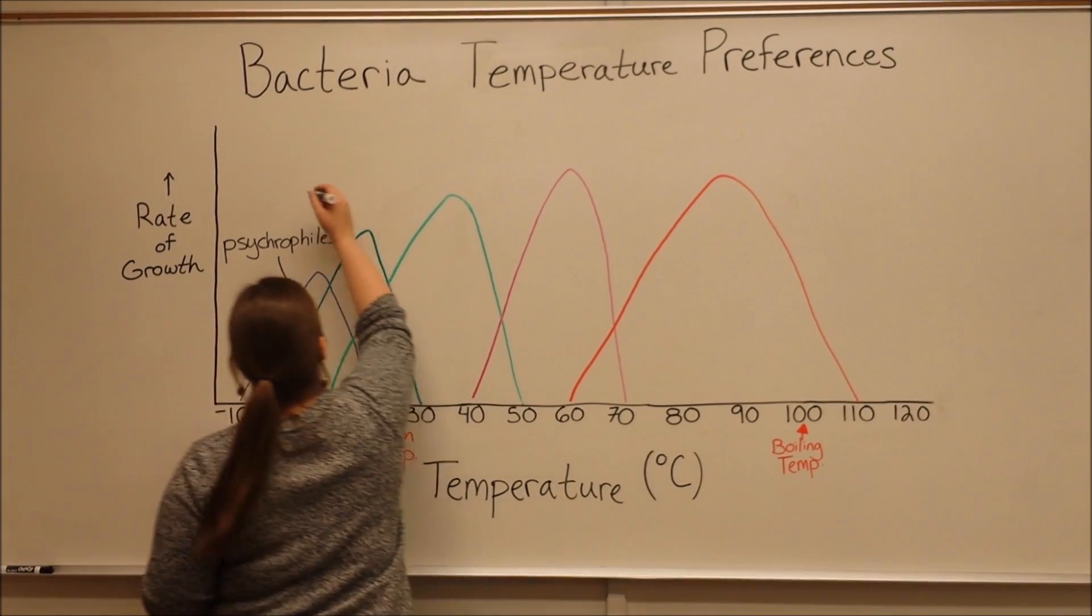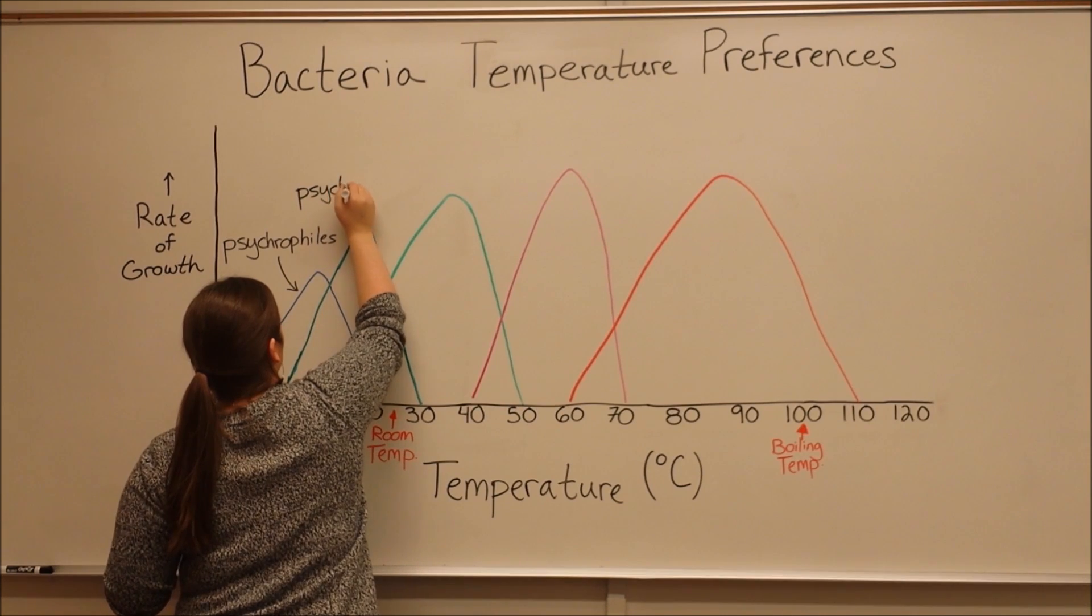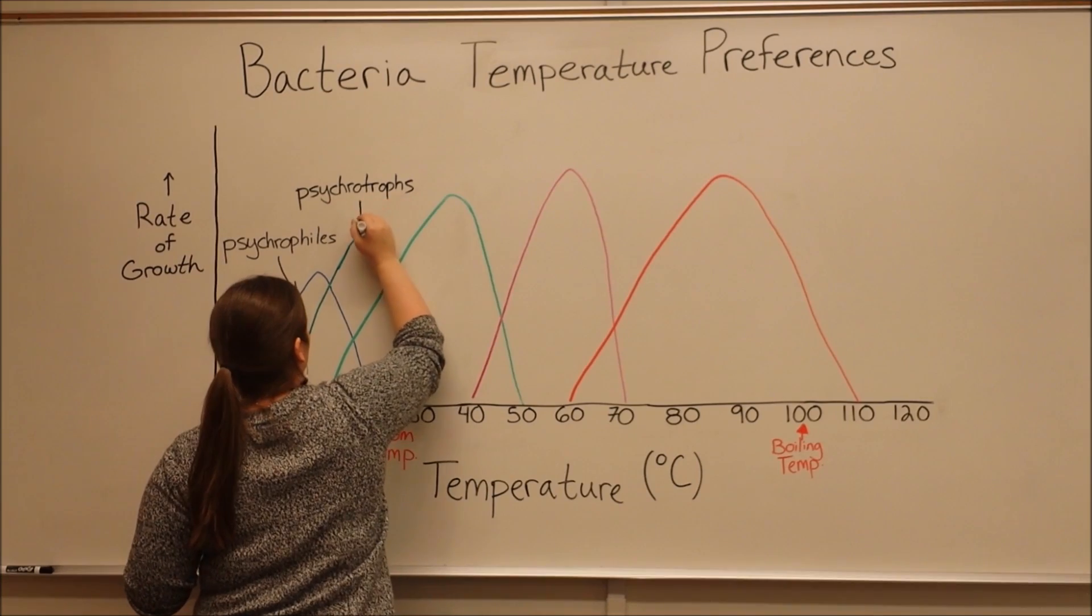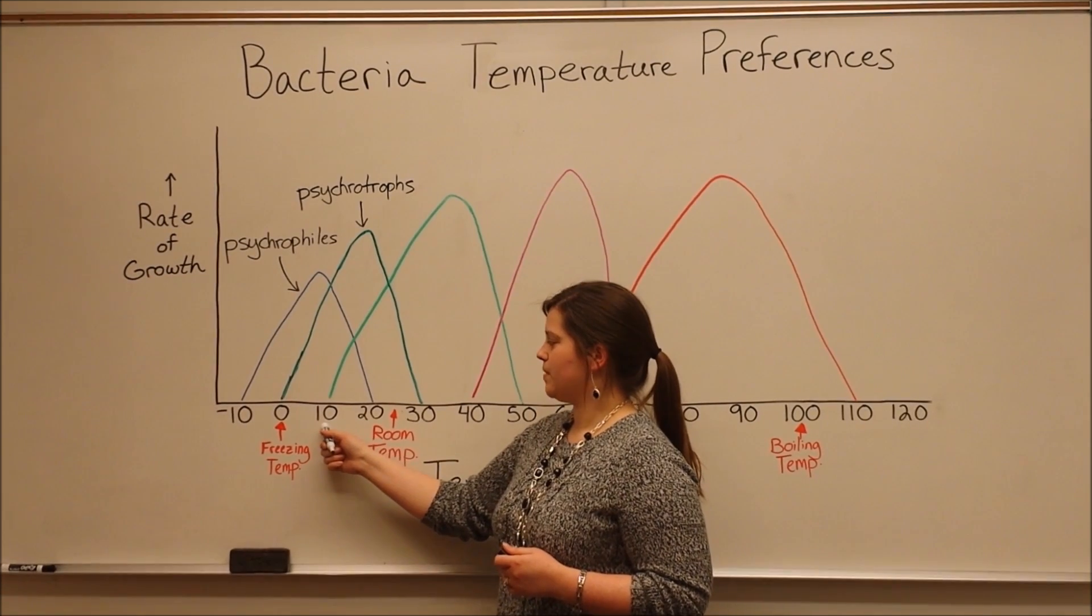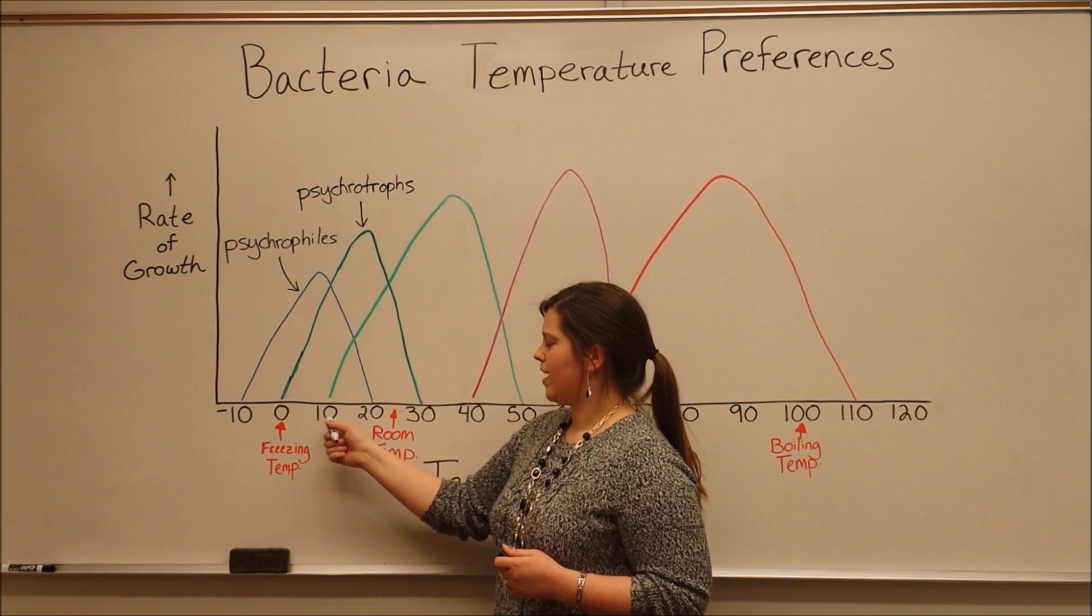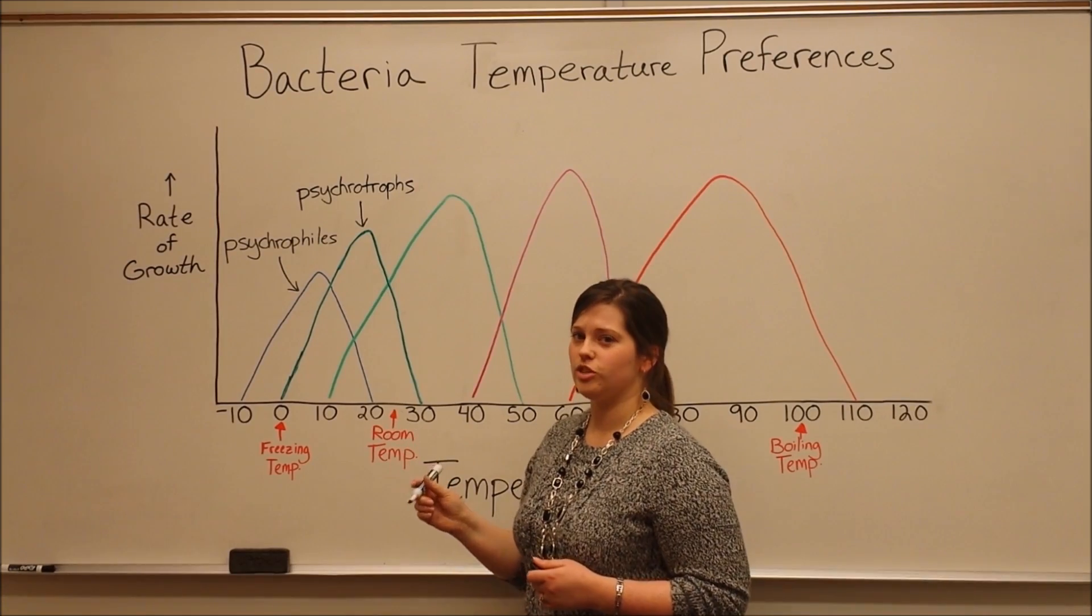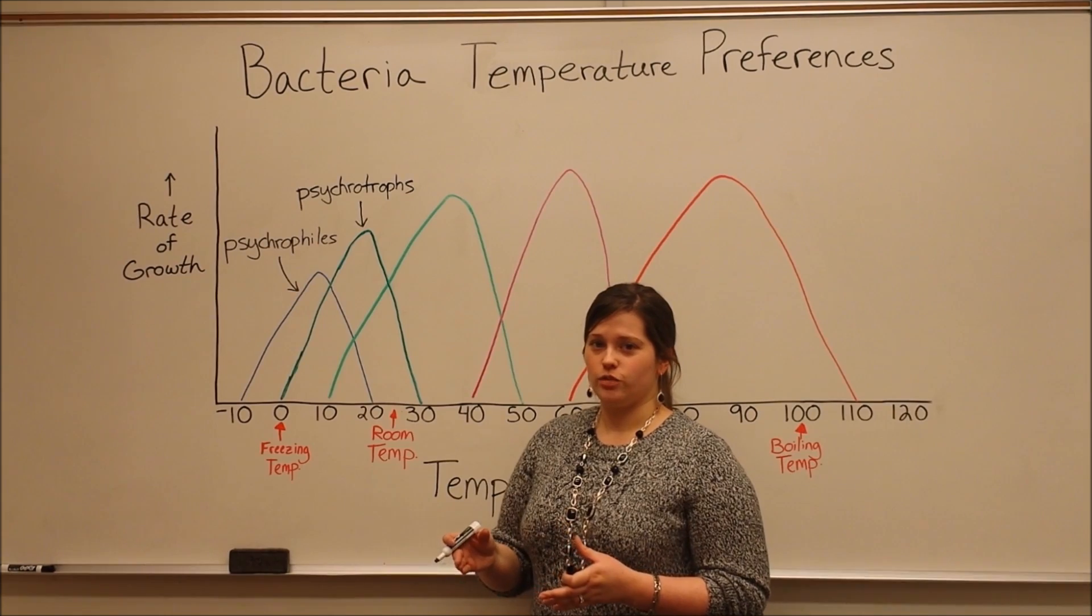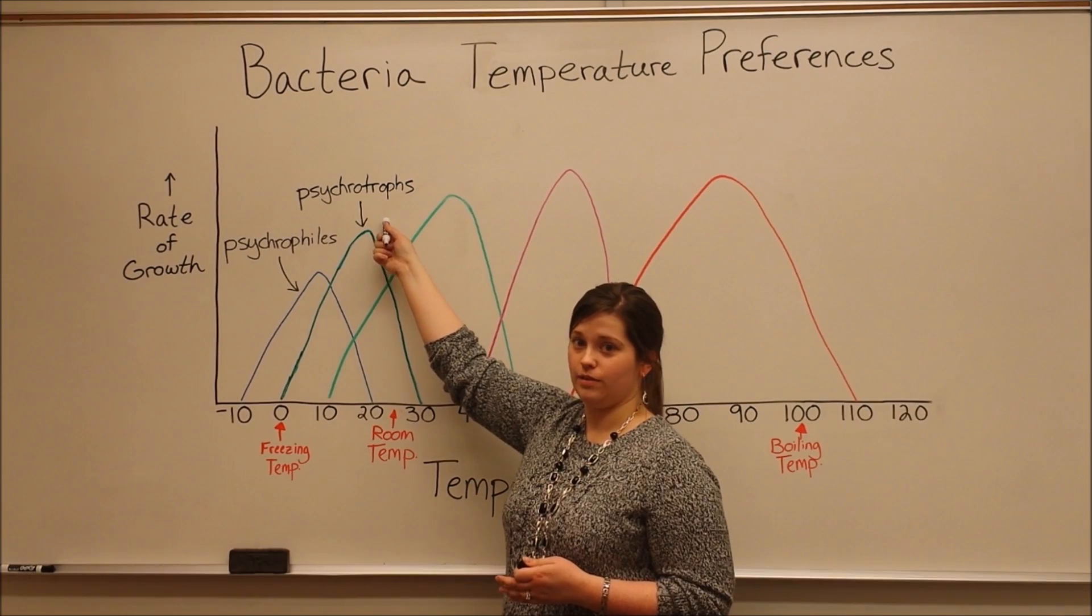Psychrotrophs are bacteria that grow typically in this 10 to 20 degree Celsius range. They can also grow at this range that's a little bit below 10 degrees Celsius, which is typically refrigeration temperature. So if you've ever had food that you put into the refrigerator and it's spoiled, the bacteria responsible for that is some type of psychrotroph.